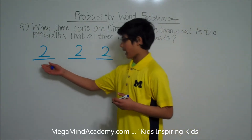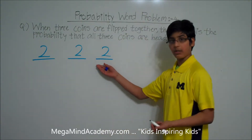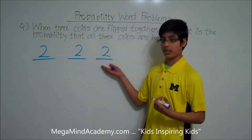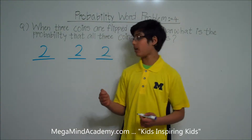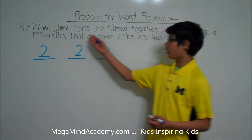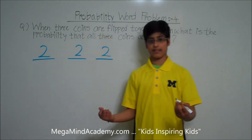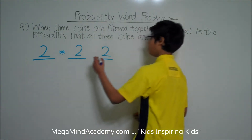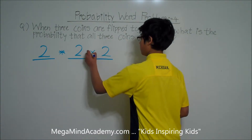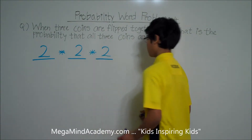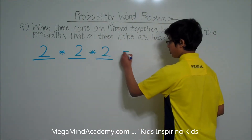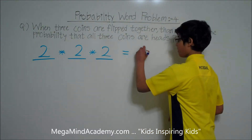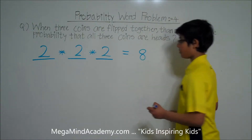Now let's multiply two times two times two, because when we do that, we get the total number of outcomes of the three coins when they are flipped together. Two times two times two equals eight, so there are eight possible outcomes.